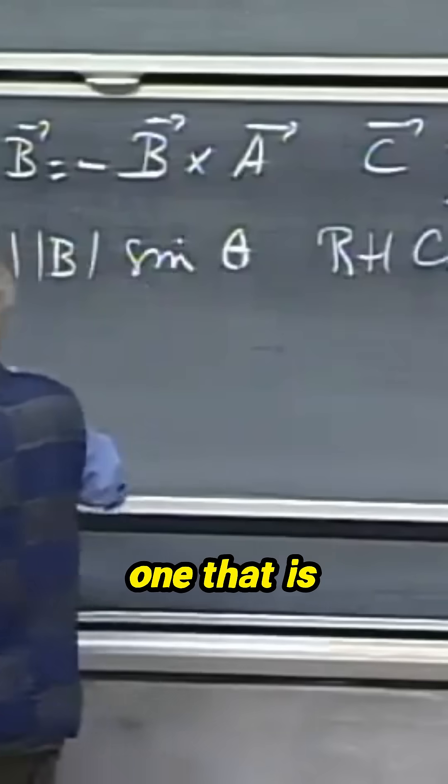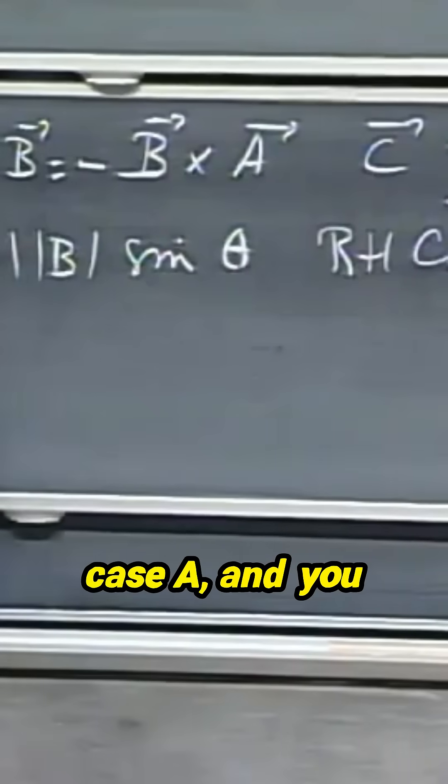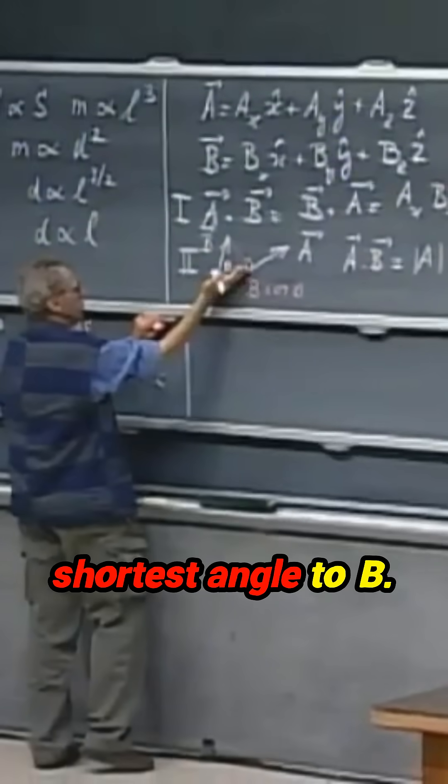You take the first one that is mentioned, in this case A, and you rotate it over the shortest angle to B.